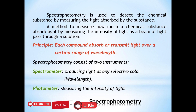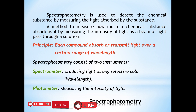A spectrophotometer is used to detect chemical substances by measuring the light absorbed by the substance. We can define spectrophotometry as a method to measure how much a chemical substance absorbs light by measuring the intensity of light as a beam of light passes through a solution, measuring the change in percentage transmission, also known as optical density.